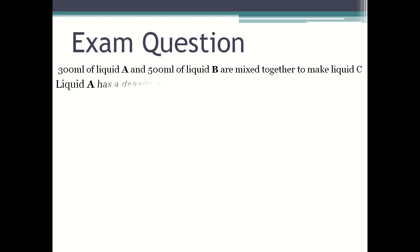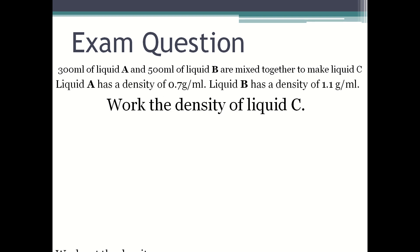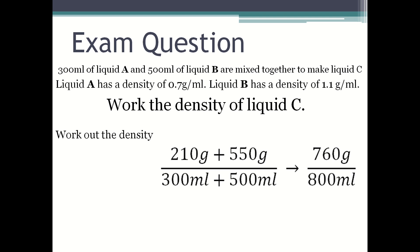To work out the density, that becomes 760 grams over 800 milliliters, and that will become 19 over 20. So the density of liquid C is 0.95 grams per milliliter.